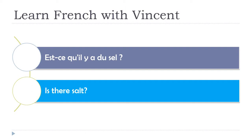The second example: 'Is there salt?' — 'est-ce qu'il y a du sel?' As you can see, I've added 'est-ce que', and because there's a vowel after, we remove the 'e' and add an apostrophe: 'est-ce qu'il y a du sel'. This makes it clear it's a question, but you still need to raise your voice: 'est-ce qu'il y a du sel?'